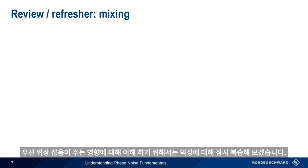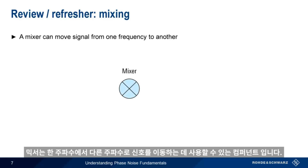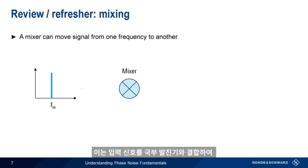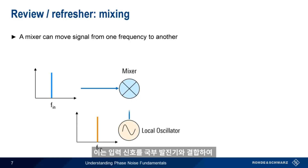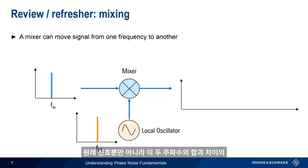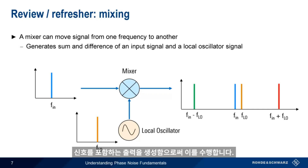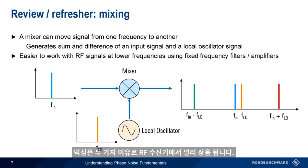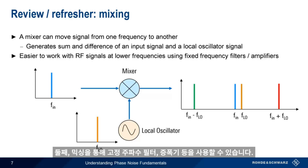Before we go on, let's pause for a brief refresher on mixing. A mixer is a device that can be used to move signals from one frequency to another. It does this by combining an input signal with a local oscillator to produce an output that contains not just the original signals, but also signals at the sum and difference of these two frequencies. Mixing is widely used in RF receivers because it's generally easier to work with lower frequency signals, and mixing allows the use of fixed frequency filters, amplifiers, etc. We simply mix the signals down to a convenient frequency for processing.